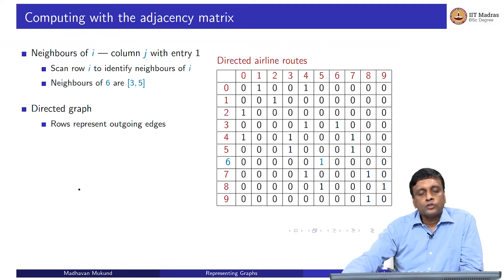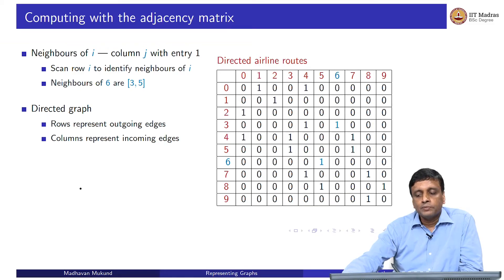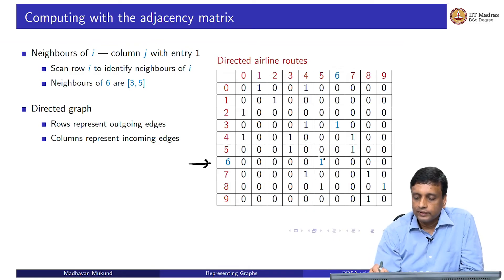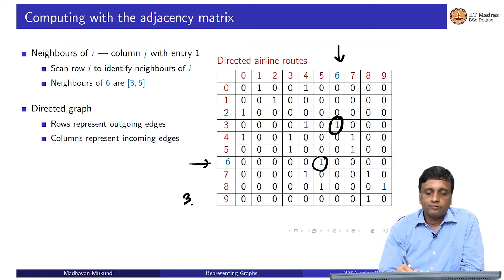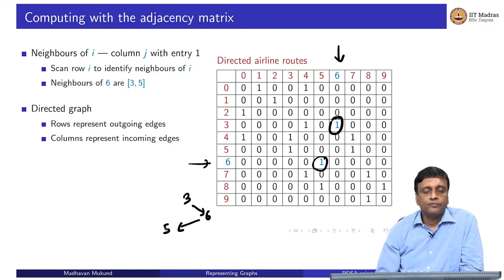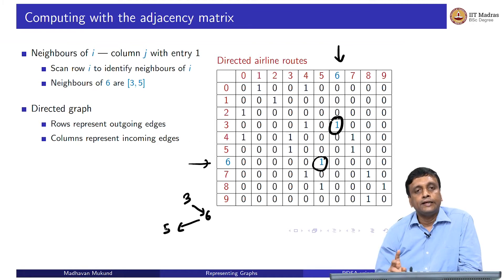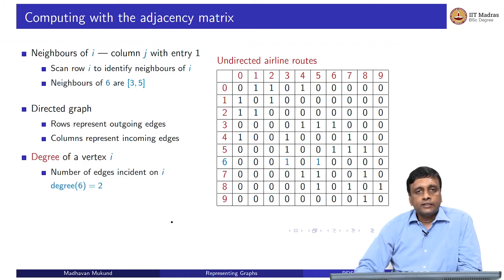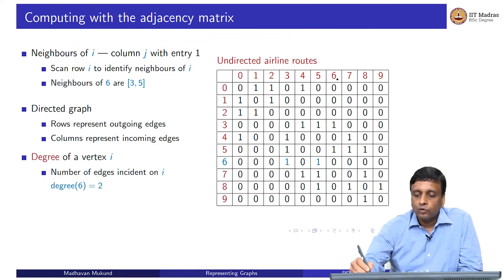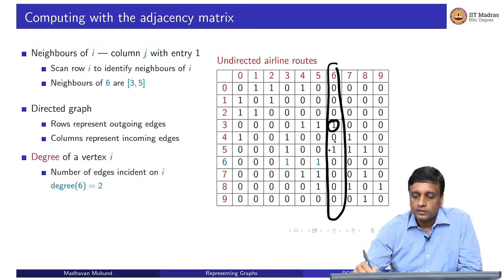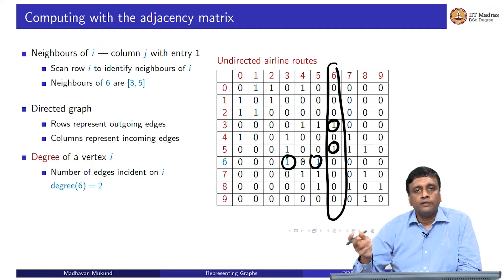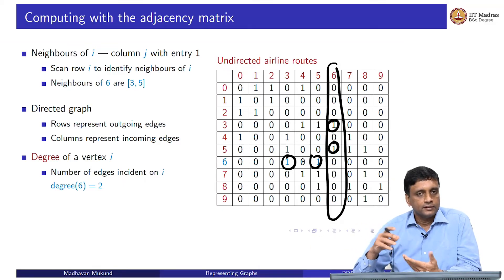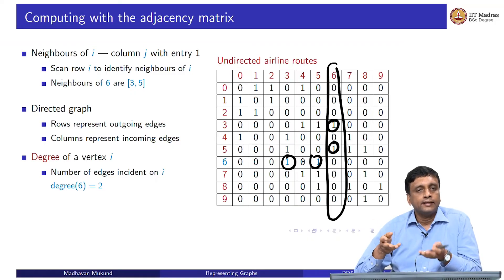If I have a directed graph, the rows represent outgoing edges, and these are not the same as the incoming edges because not every outgoing edge has a matching incoming edge. So the columns represent incoming edges. If I look at row 6, this entry represents an edge from 6 to 5. If I look at column 6, this represents an entry from 3 to 6. The degree of a vertex is the number of edges incident on it. In an undirected graph, column 6 has two 1s and row 6 has two 1s, giving degree 2.